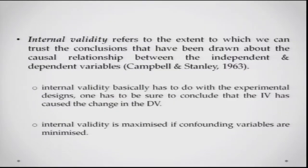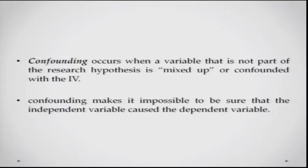Coming to internal validity — it refers to the extent to which we can trust that the independent variable is actually the variable that has caused the effect on the dependent variable. Internal validity has to do with experimental designs. We try to keep our experimental designs such that we have controlled all possible variables that could have an effect and make sure it is only the independent variable whose manipulation leads to whatever effects happen with the dependent variable. Internal validity is maximized if confounding variables are minimized. A confounding variable is one which is not part of the research hypothesis or is mixed up with the independent variable.